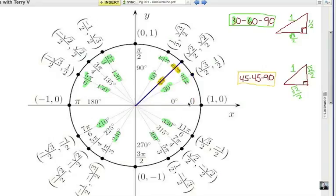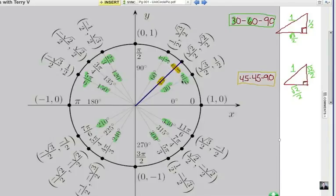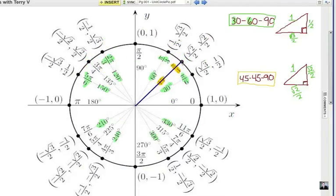How about a 45, 45, 90 triangle? Well, at 45 degrees, which is Pi over 4 radians, if we were to find the triangle or draw the right triangle, you notice it would be 45, 45, 90.